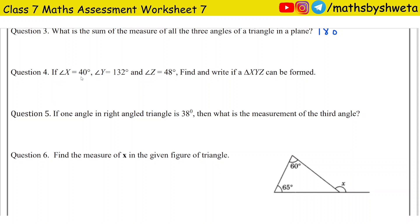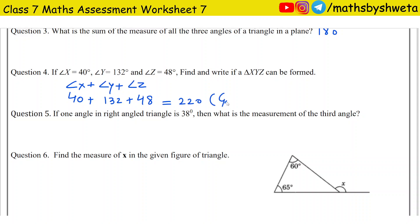Question number 4: If angle x equals 40 degrees, angle y equals 132 degrees, and angle z equals 48 degrees, find and write if triangle XYZ can be formed. We can make a triangle only when the sum of the 3 angles is 180 degrees. So, angle x plus angle y plus angle z equals 40 plus 132 plus 48, which gives 220 degrees. This is greater than 180 degrees, so triangle XYZ cannot be formed.